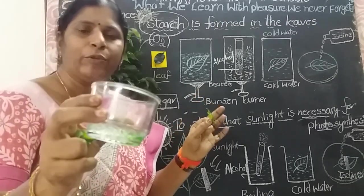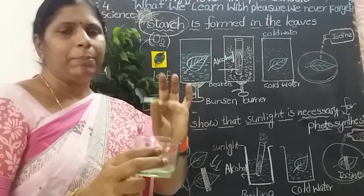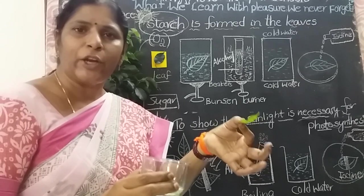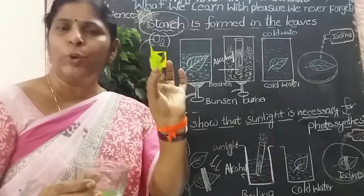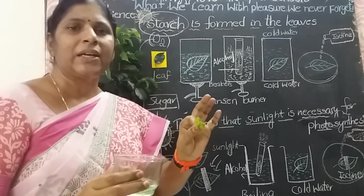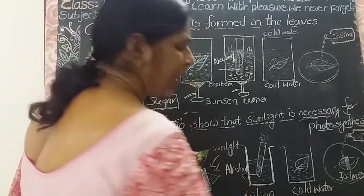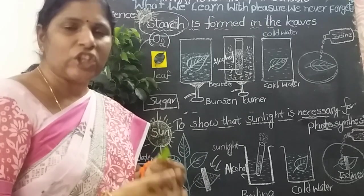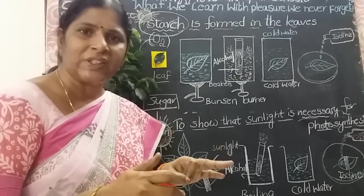Chlorophyll dissolves when we keep the leaf in the alcohol solution. Take out the pale green leaf, keep on the plate, and add a few drops of iodine solution. Immediately, that pale leaf turns into bluish black. This experiment proves that starch is formed in the leaves. All green leaves contain starch. Starch is formed during the process of photosynthesis.